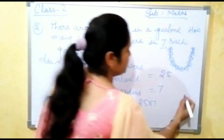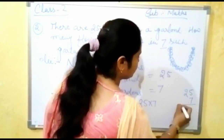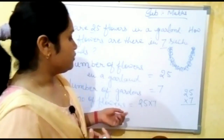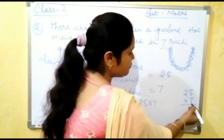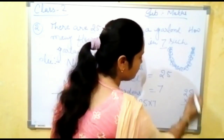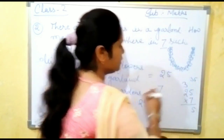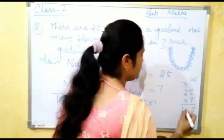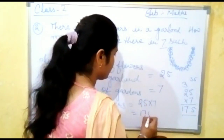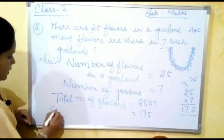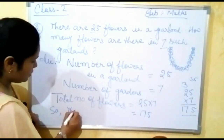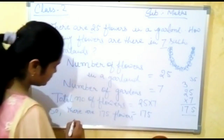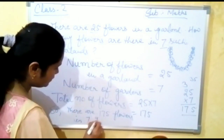Now we will write both numbers in vertical form. Students, you need to learn the tables very clearly — it will be helpful for you. 7 fives are 35, so we write 5 here and 3 is carried forward. Now 7 twos are 14, and 14 plus 3 is 17. So our answer is 175. There are 175 flowers in 7 garlands.